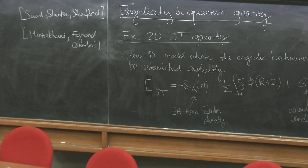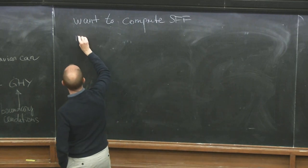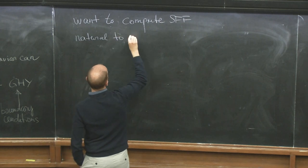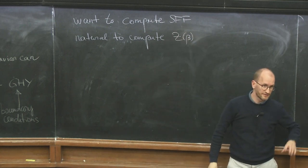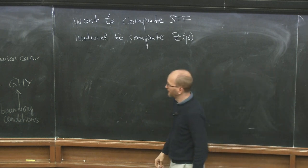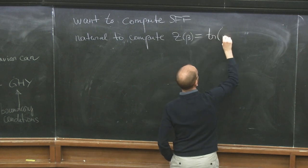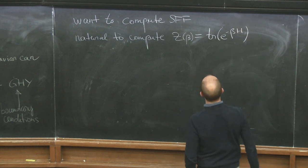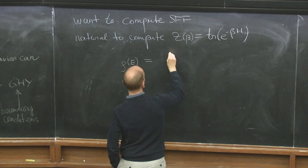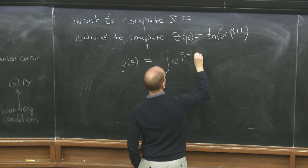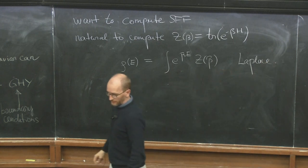We want to compute the spectral form factor of this theory. In this setting, it's quite natural to compute things like partition functions where you fix the inverse temperature. Fixing the inverse temperature is precisely fixing the length of the boundary circle, which is what these boundary conditions will achieve. Z of beta is the thermal trace e to the minus beta H of the system, and I can reconstruct the spectral density rho of E via inverse Laplace transform of Z of beta.